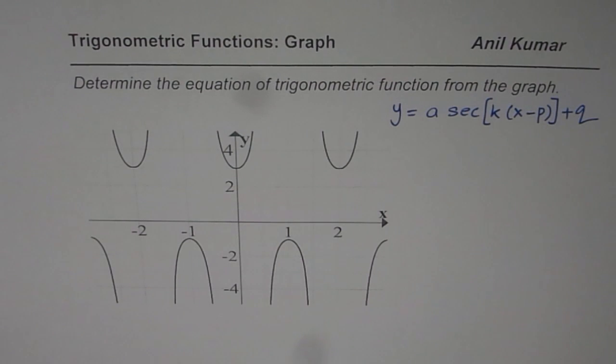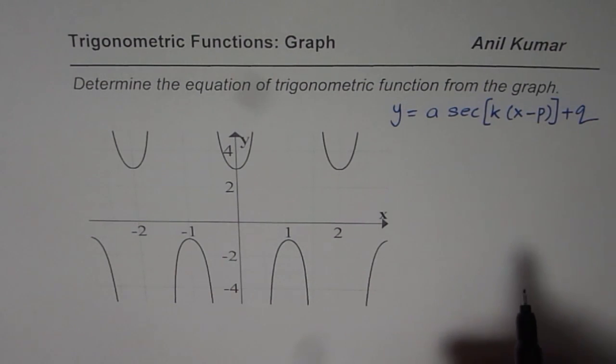To get to the secant function what we can do is we can draw the reciprocal of the secant function which is cosine function from the given information and then find the secant function. That could be a good way of doing it.